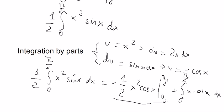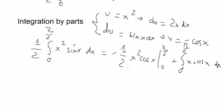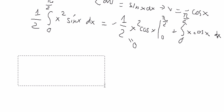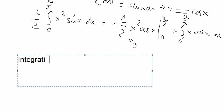So when we put the bounds in here, you get zero, so we just have only this one left. So next, we use integration by parts again.